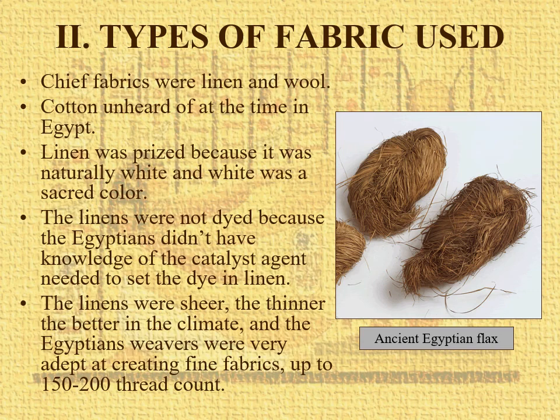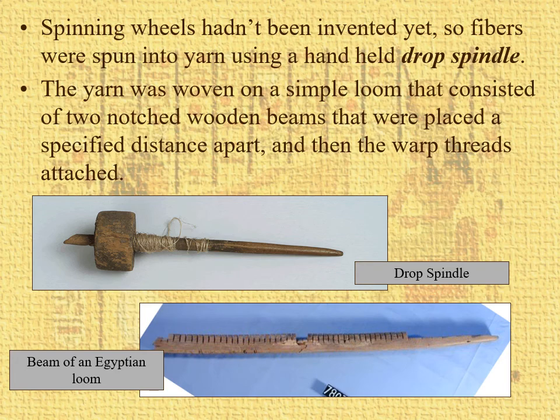Types of fabric used: mostly linen and wool. Cotton was unheard of at the time, which is kind of interesting since Egypt is a leading cotton producer today. Linen was prized because it was naturally white, and white is sacred. Linen wasn't dyed because they didn't have the catalyst needed to set the dye — dyeing linen is easy, but colorfastness is the problem. It was sheer; the thinner the better because of the climate. Egyptian weavers could achieve up to 200 thread count, which was pretty good for the time. Spinning wheels hadn't been invented yet, so they used handheld drop spindles and a very simple loom.